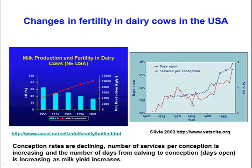This is another graph showing the number of days that a cow remains open — the American terminology — or the number of days it remains not pregnant following calving. You can see there's been a progressive increase in the number of days open, particularly since the 1980s. So it's taking cows longer to get in calf, and it's taking more services per conception — they're having to be inseminated more often before they get pregnant.